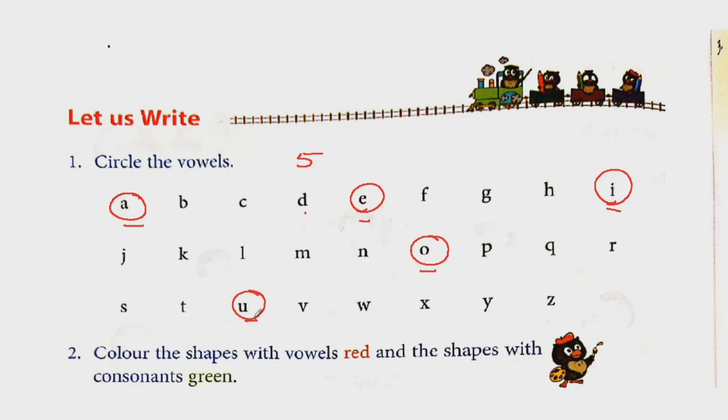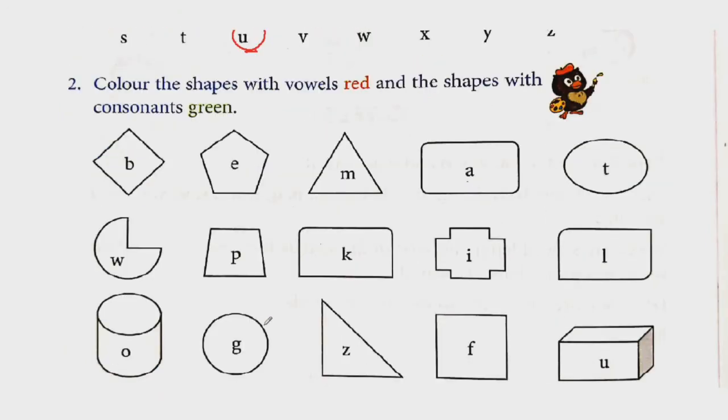Now next question. Color the shapes with vowels in red and the shapes with consonants green. In these shapes, the vowel you see, you have to color red. So whichever I'm circling, whichever vowel, you will color that red. And the remaining shapes you will color green. First one is B. B is a vowel? No. E is vowel? Yes. So you will color E red. M is not the vowel. A is vowel? Yes. So you will color this shape red.